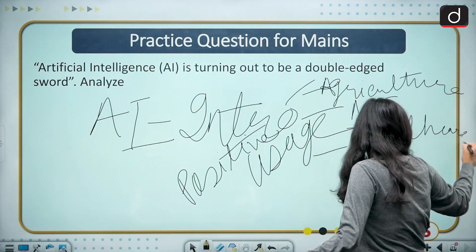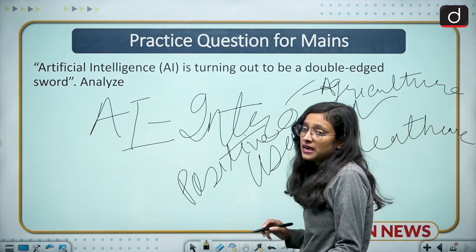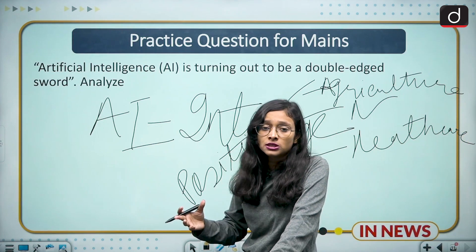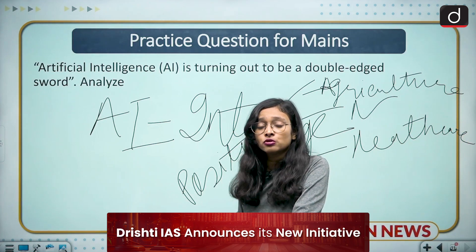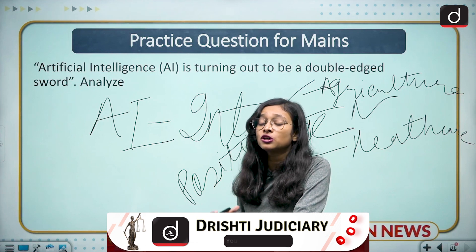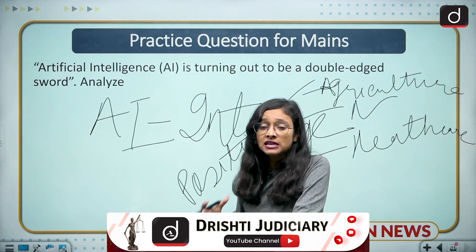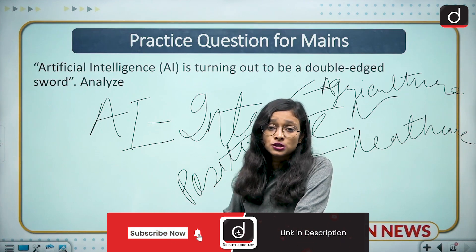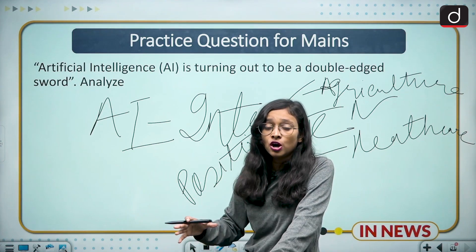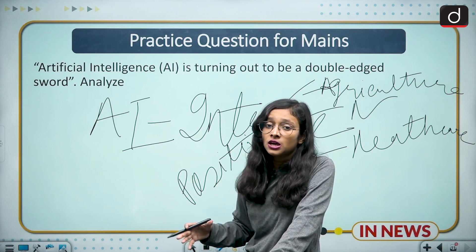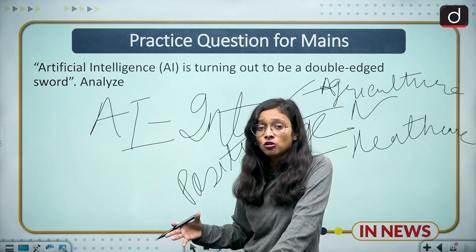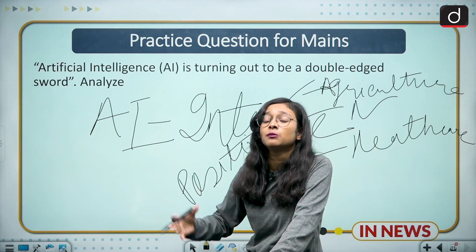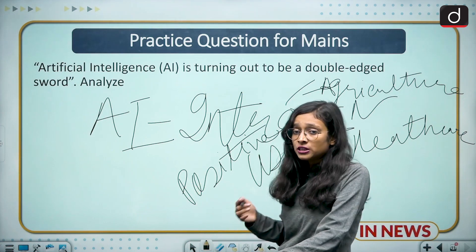Coming to healthcare: recently the world experienced a pandemic, and during COVID we saw that human-to-human contact was restricted due to infectious disease. In that area, AI worked extensively — it detected the manner in which infection was spreading in anyone's body. AI is widely used in healthcare. Now, coming to the disadvantages and how AI is becoming the double-edged sword — you have to write the misuse of AI.